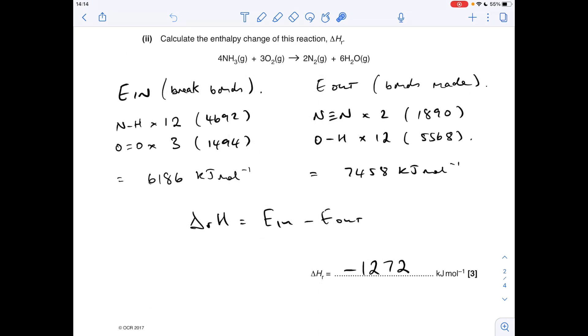Next part of the question: we've got to calculate the enthalpy change for this reaction here using those bond enthalpy values. I call this an 'in minus out.' The E in, the energy in, that's to break all the bonds in the reactants. In each mole of NH3 we've got three NH bonds.